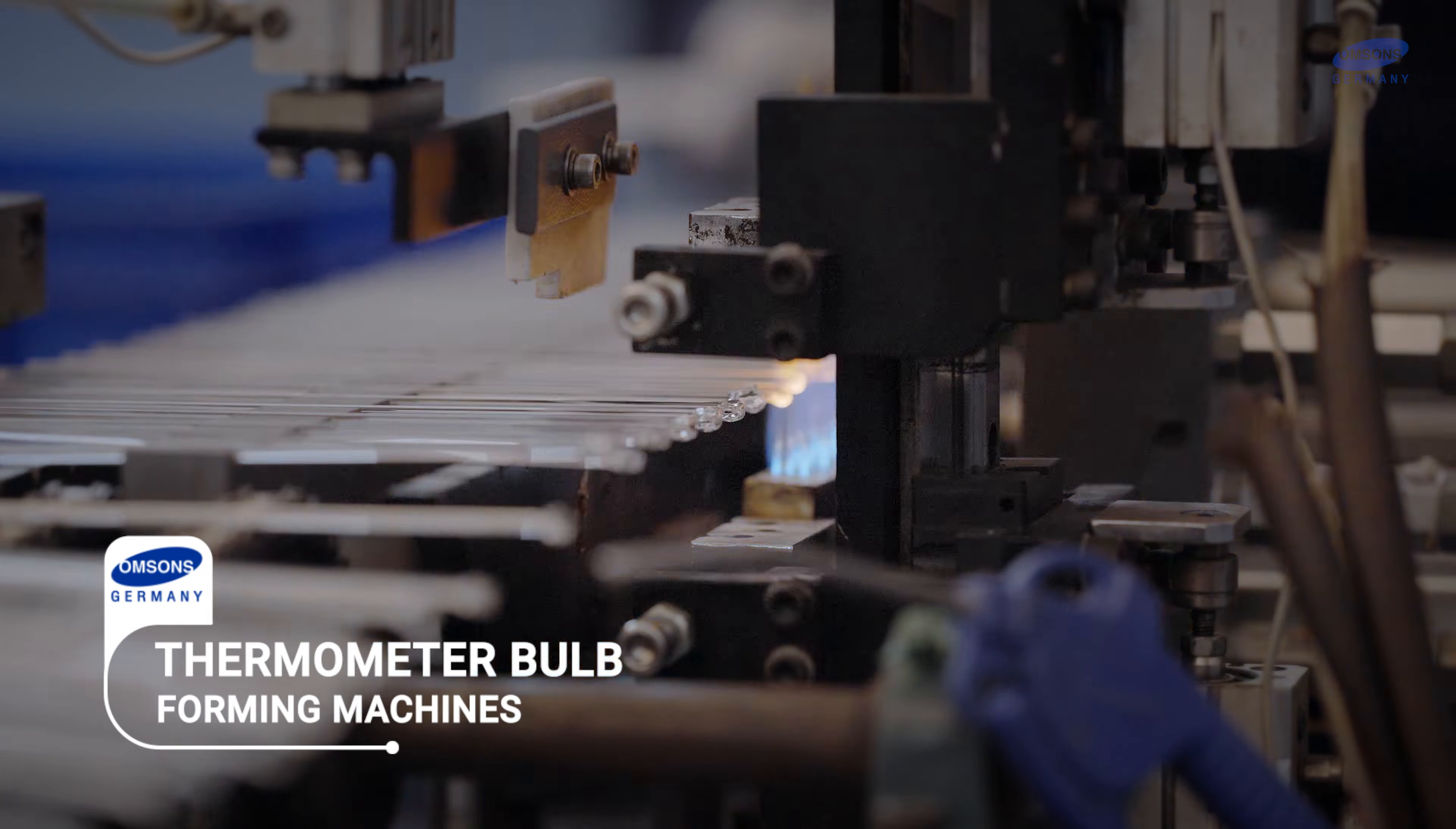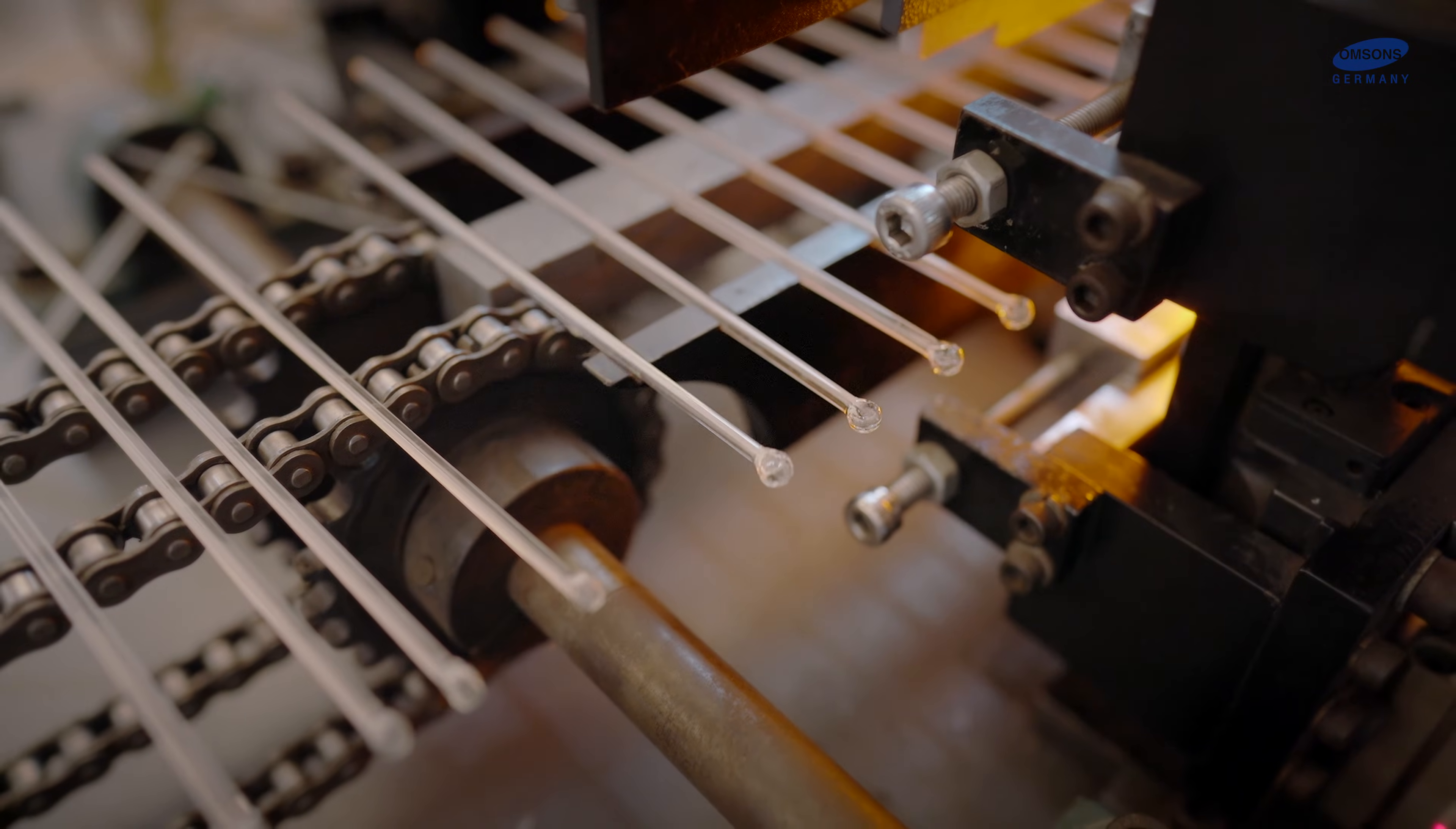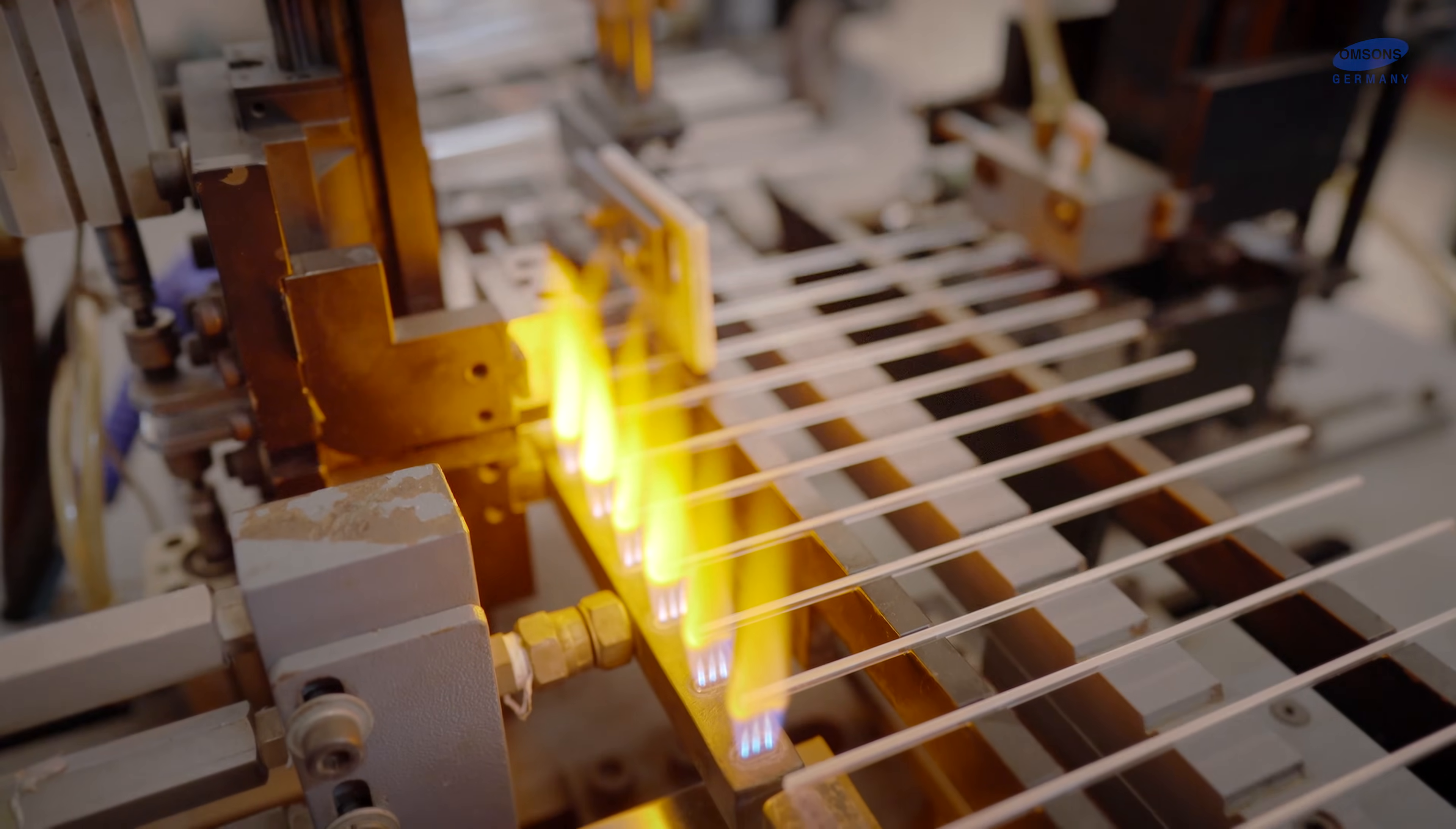Thermometer bulb foaming machines. This machine forms bulbs of thermometers with very high precision. It has the capacity to produce 12,000 pieces per day.